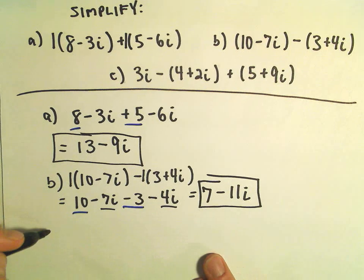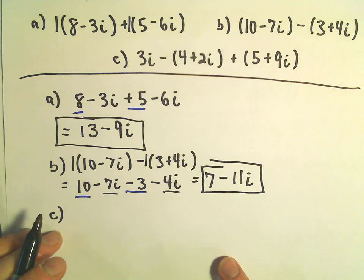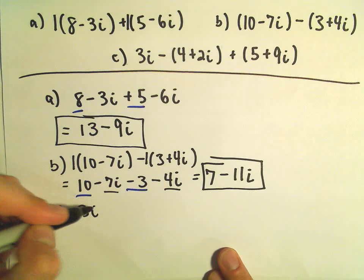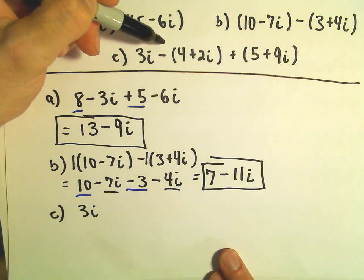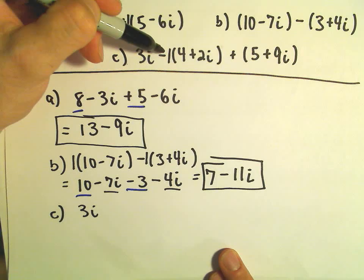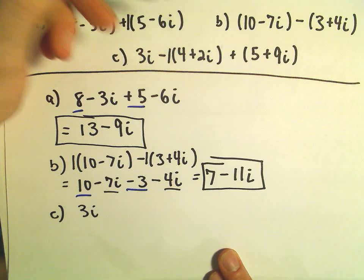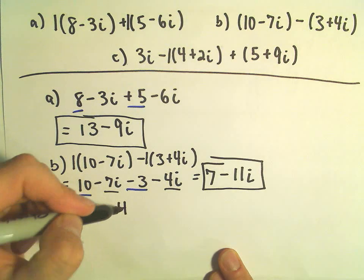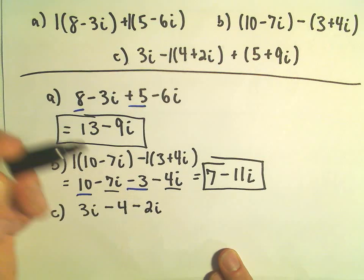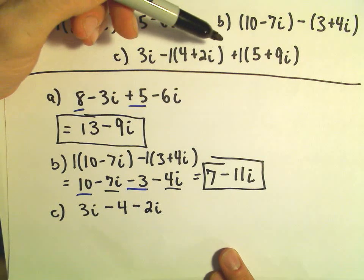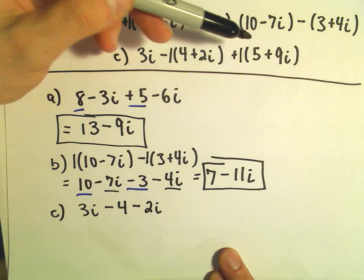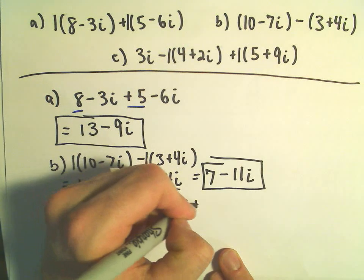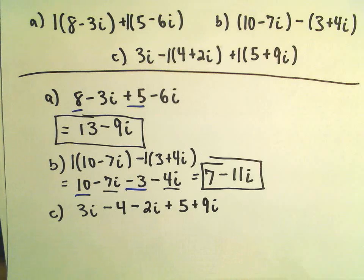Alright, one more here. So we have 3i. I'm going to go ahead and distribute this out. If you think about there being a negative 1, we'll get a negative 4 minus 2i. So negative 4 minus 2i. And then if you imagine there being a positive 1 when we distribute, we'll simply get a positive 5 plus 9i.